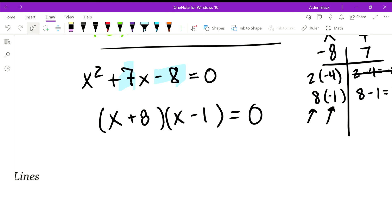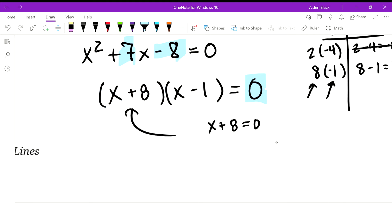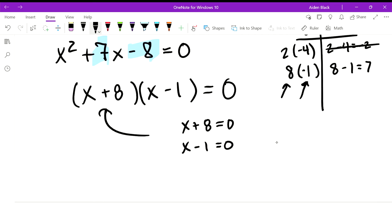Now I like to just think of it as what value of x in this binomial would provide us with 0. So if I plugged in a value for x, what would make x plus 8 equal 0? Another way you can do this is just to write x+8=0 and solve for x. Same thing for x-1=0. So x+8=0, that must mean that x=-8, and then for this one x=1. So here are our two solutions.